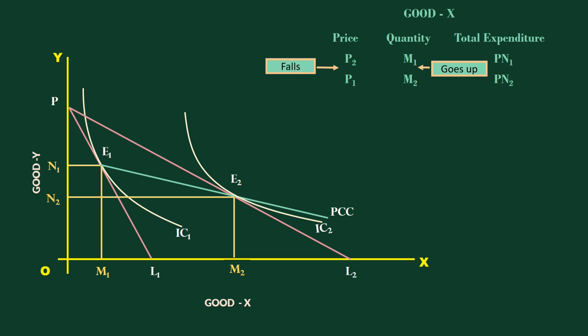Two, we have to compare the price movement with the movement of the total expenditure. The price falls from P2 to P1. The total expenditure increases from PN1 to PN2. You must understand PN2 is greater than PN1. As the total expenditure increases with a fall in price, the demand is relatively elastic. A sloping downward price consumption curve tells us that good X is facing relatively elastic demand.